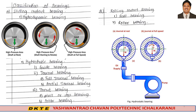Working principle: initially the shaft is at rest, and it settles down at the bottom-most point on the inner surface of the bearing under the action of load. When the pump starts, it forces high pressure lubricating oil inside the bearing system. This high pressure oil lifts the shaft and forms a layer of lubricating oil around the shaft, keeping the shaft floating in the bearing.